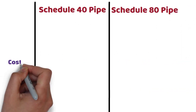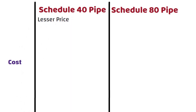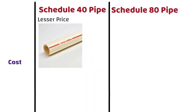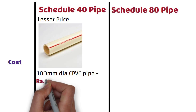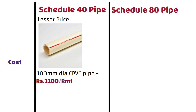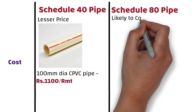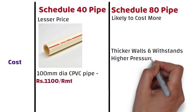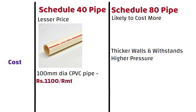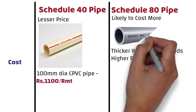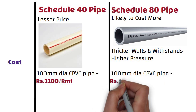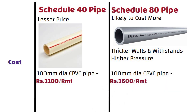Cost: Schedule 40 pipe has a lesser price compared to schedule 80 pipe. For example, the price of schedule 40 CPVC pipe of 100mm diameter is available at 1100 rupees per running meter.